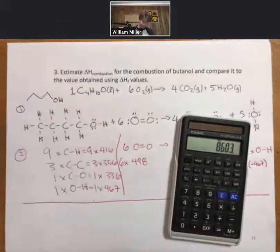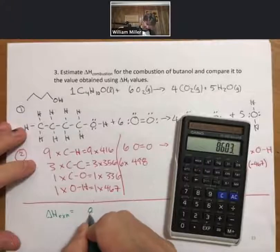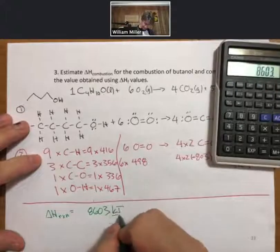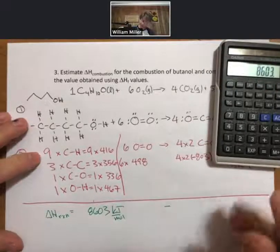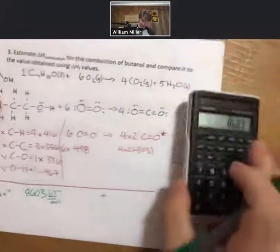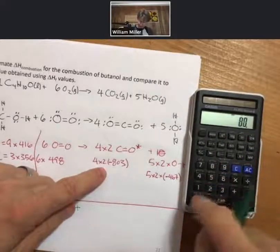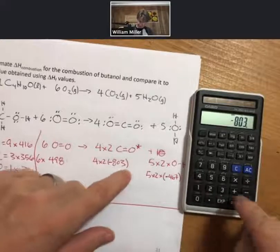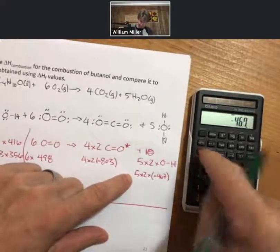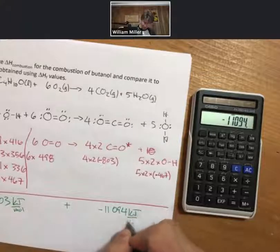8,603. So it says ΔH reaction equals 8,603 kilojoules per mole minus—or let's say I have to do a plus then I'm going to do with my minus numbers over here. Call me crazy.